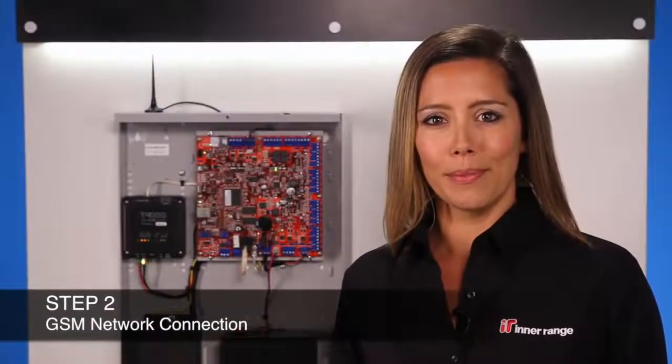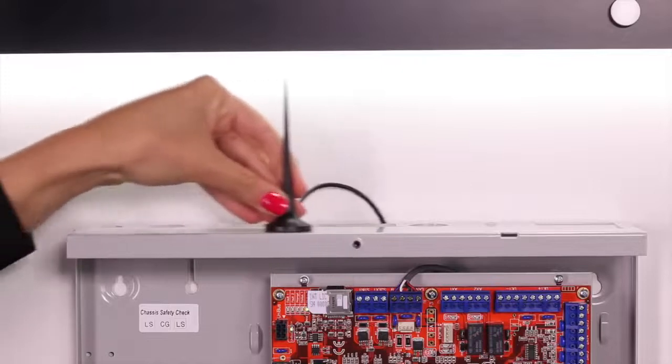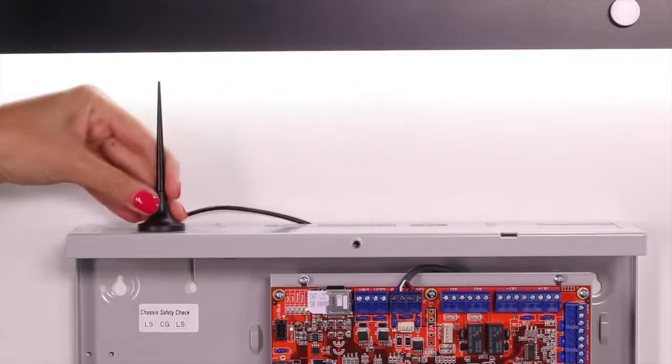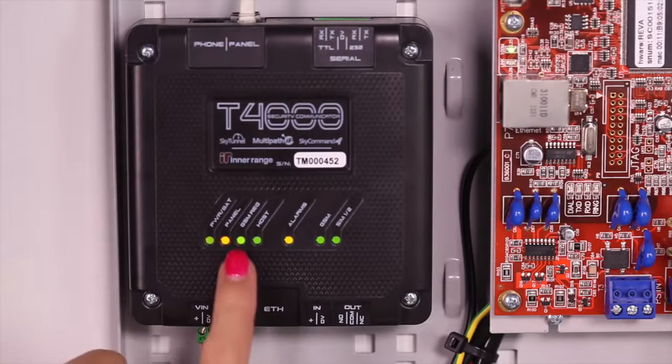Step two: position the antenna for maximum signal reception. Now that the T4000 is powered up, it will attempt to make contact with the InnerRange cloud and wait for enrollment by the central station operator. Keep an eye on the GSM reg indicator. It will turn on solid once connected to the GSM network.